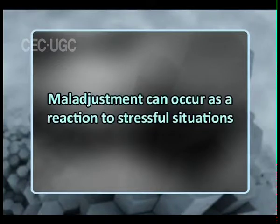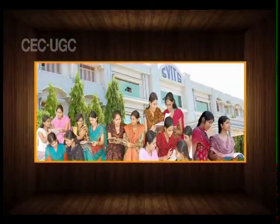So that one can establish a harmonious relationship with the environment. If one fails to make these variations and changes, the needs will not be satisfied and the demands will not be met, resulting in maladjustment or disharmony with one's environment. Maladjustment can occur as a reaction to stressful situations. There are many factors responsible for maladjustment, including factors related to home, family, school, peers, and teacher.